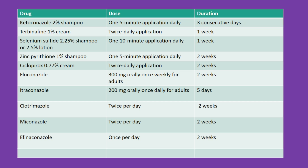For treating Tinea versicolor, effective topical options include: Ketoconazole 2% shampoo, applied for 5 minutes daily for 3 consecutive days; Terbinafine 1% cream, used twice daily for 1 week; Selenium sulfide 2.25% shampoo or 2.5% lotion, applied for 10 minutes daily for 1 week; Zinc pyrithione 1% shampoo, used for 5 minutes daily for 2 weeks; and Ciclopirox 0.77% cream, applied twice daily for 2 weeks.